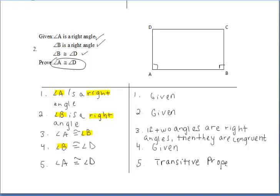That would be enough to write, but let's note what we're working with: we have two angles that are congruent to the same exact angle, which means they're congruent to each other. So in this version of the proof, we don't even use the substitution property — we use the transitive property. Please keep that in mind moving forward.